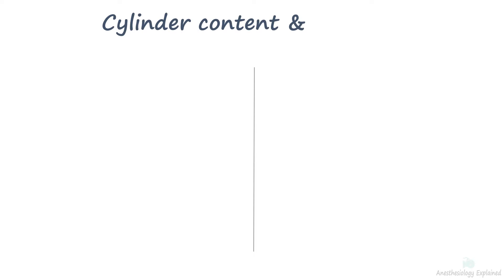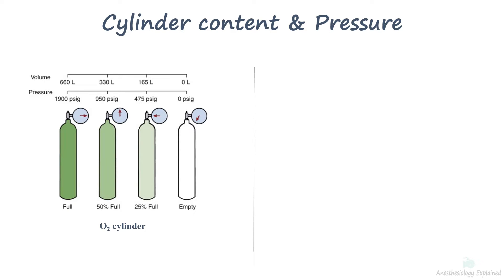Cylinder pressure will be the indication of its volume only if the contents are all in gaseous state. The diagram below shows how the oxygen volume and the pressure gauge reading correlates. The pressure falls linearly as the gas flows from the cylinder. Thus, the pressure always reflects the amount of oxygen remaining in the cylinder.